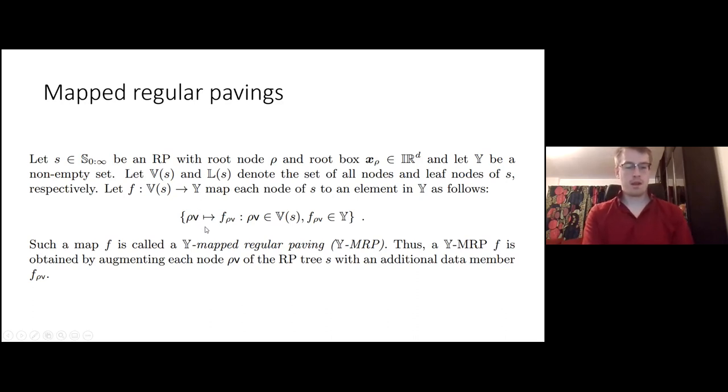Let f be a mapping from the set of all nodes to this set Y, which is arbitrary. It could be anything we like, or it needs to be non-empty. So you map these nodes to some value, where the nodes are from the set of nodes and the value is from Y. And this map is called a Y mapped regular paving.